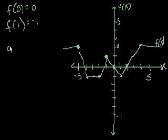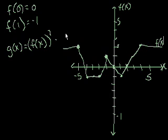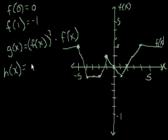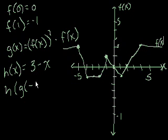And let's say that we define g(x) is equal to f(x) squared minus f(x). And let's say that h(x) is equal to 3 minus x. So what if I were to ask you, what is h of g of negative 1?